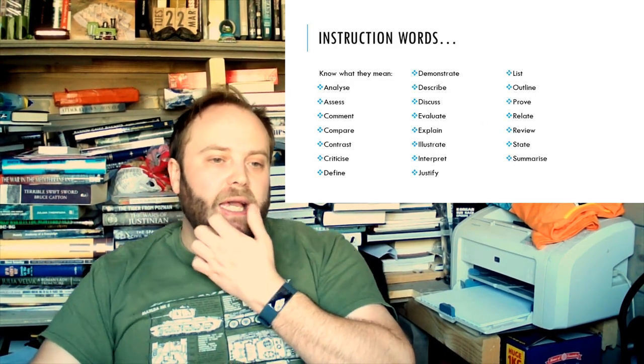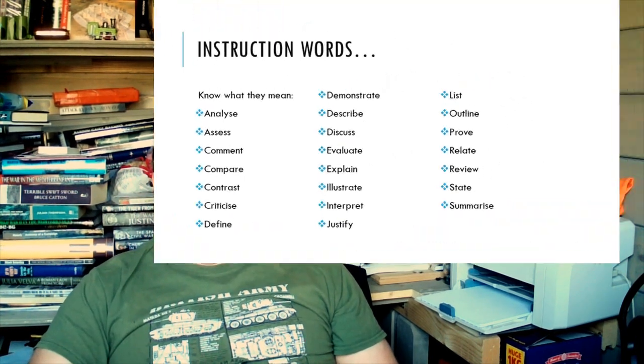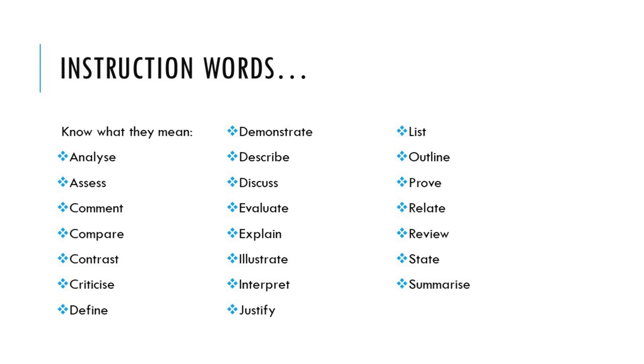Instruction words: Analyze—that usually means break down the issue into parts, discuss them, and show how they interrelate. Assess—consider the value or importance of the issue, paying attention to positive, negative, and disputable aspects. Another word which sometimes comes up is argue—make a case based on appropriate evidence for and against the point of view. Comment—analyze or assess the issue. Compare—look for similarities and differences between the issues. Contrast—point out differences between the issues. Criticize—make your judgments about the issues and indicate the criteria on which you base those judgments. It's basically asking for a lot of high-level analysis. Define—make a statement as to the meaning or interpretation of the issue, giving enough detail to allow it to be distinguished from similar issues.